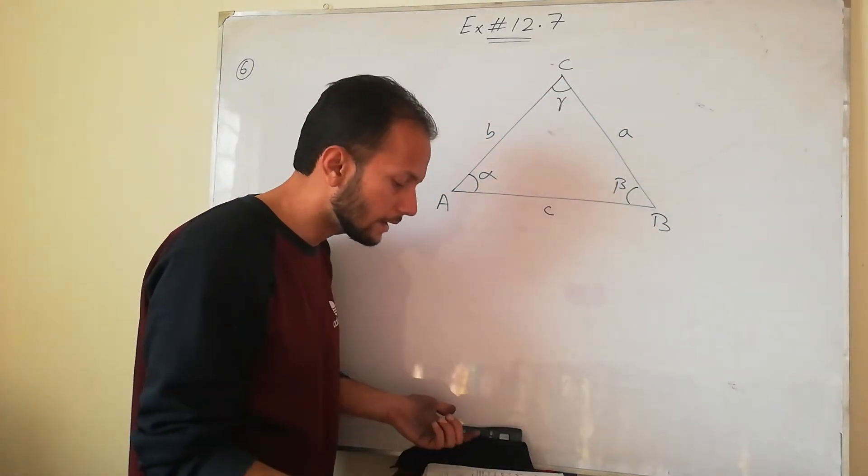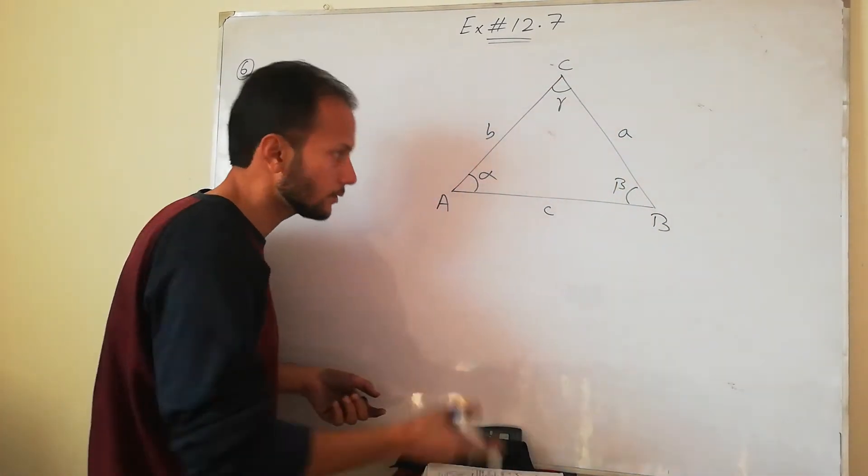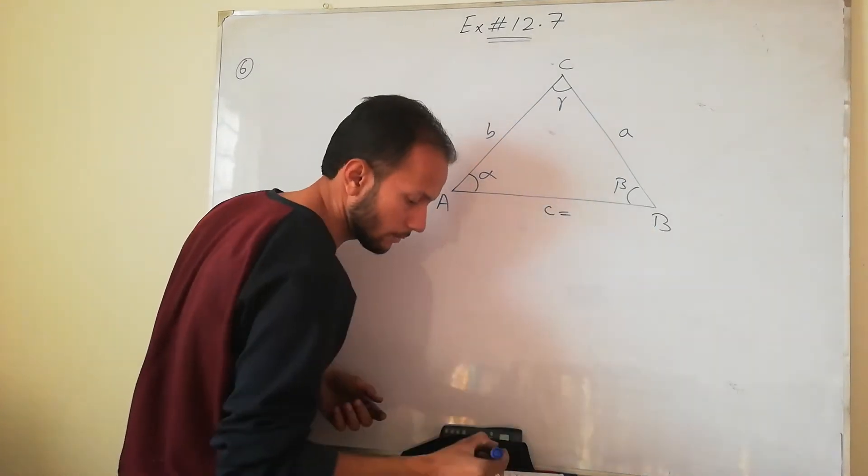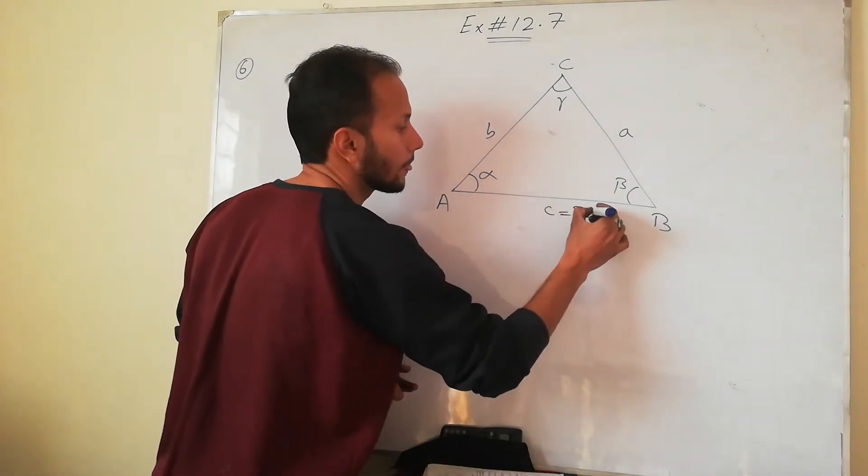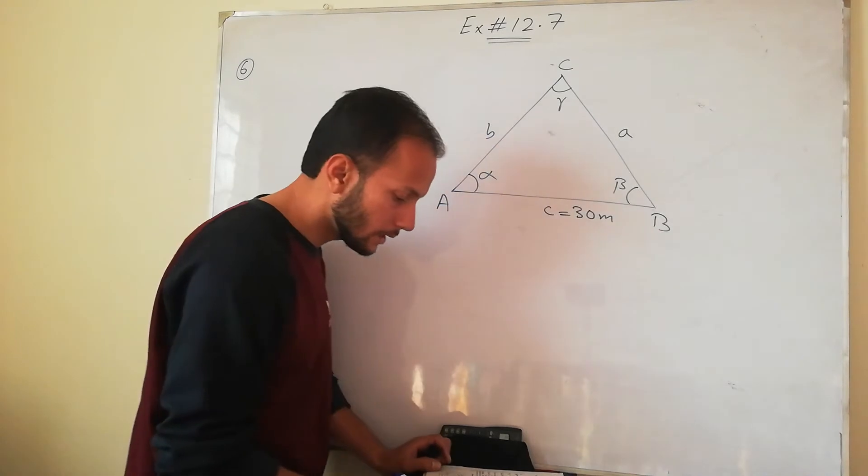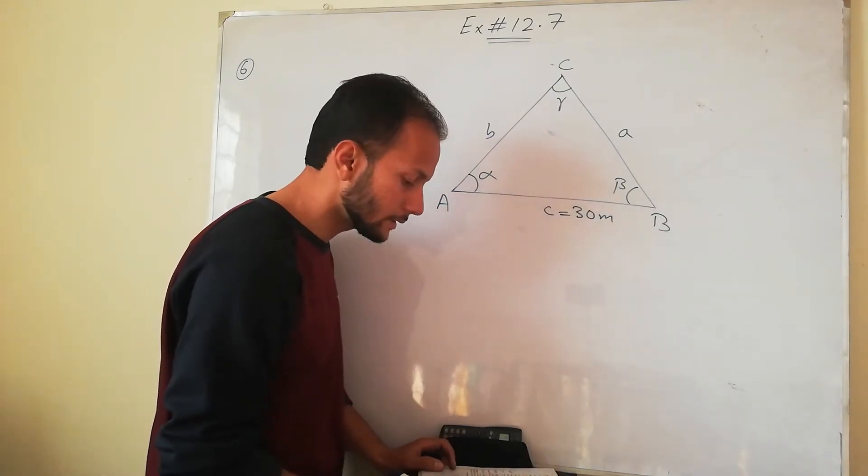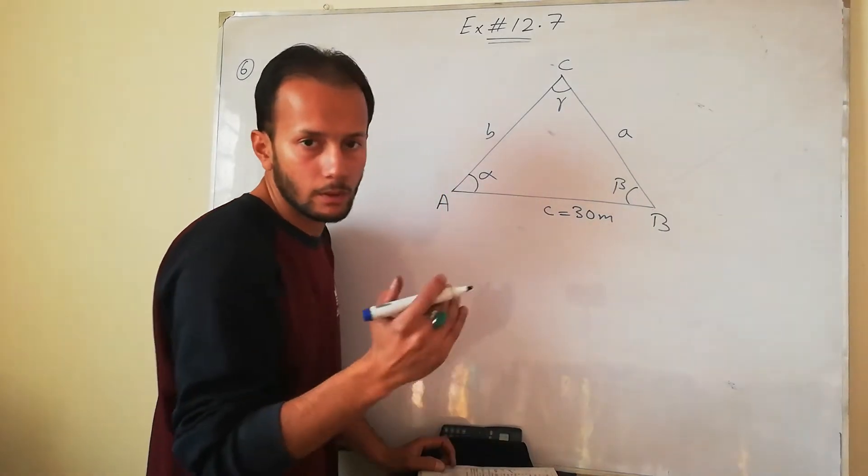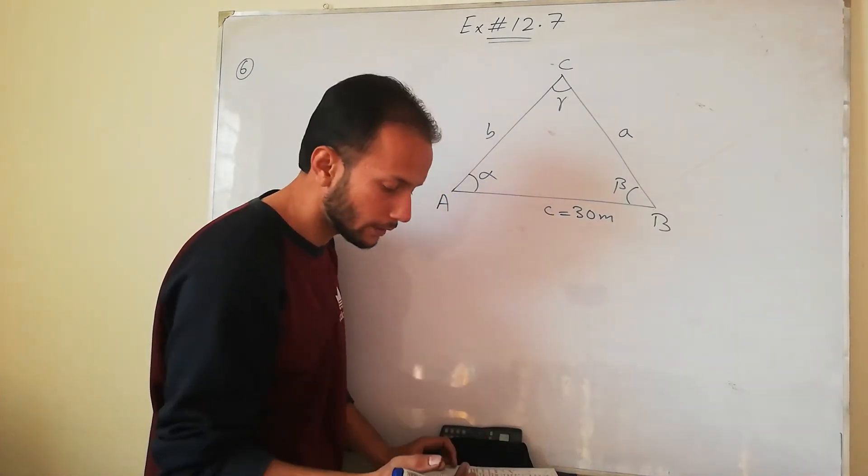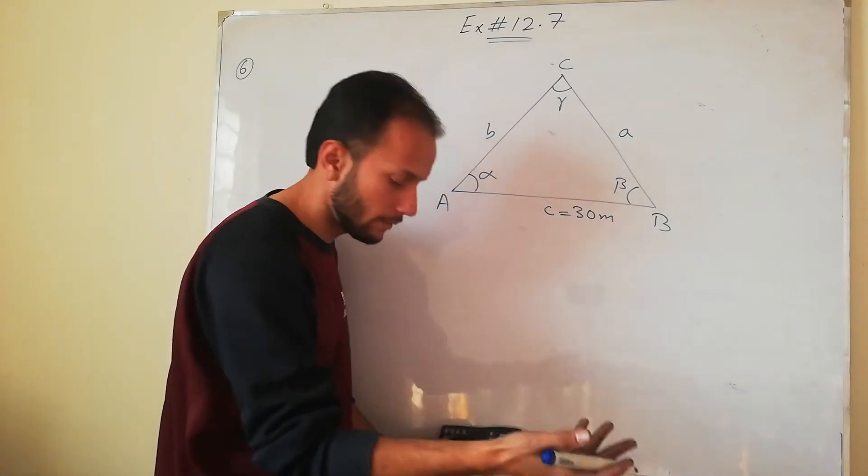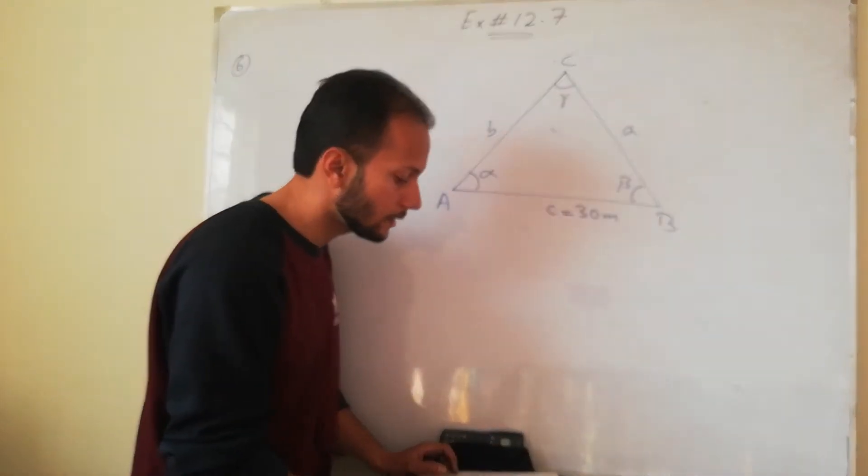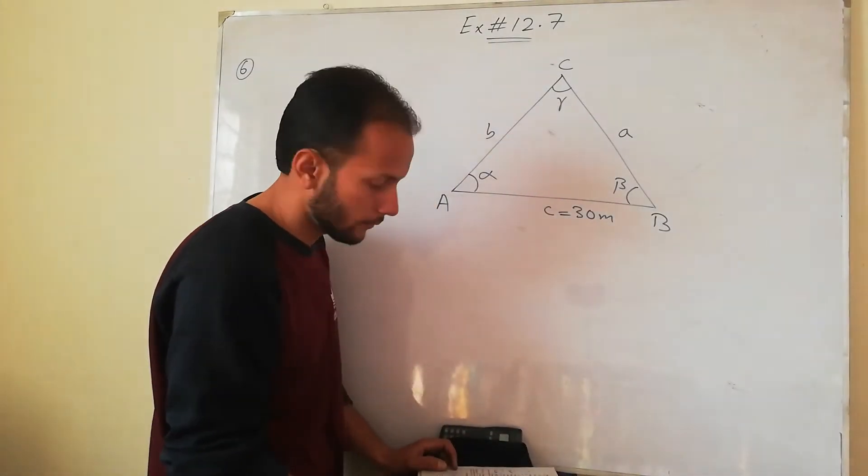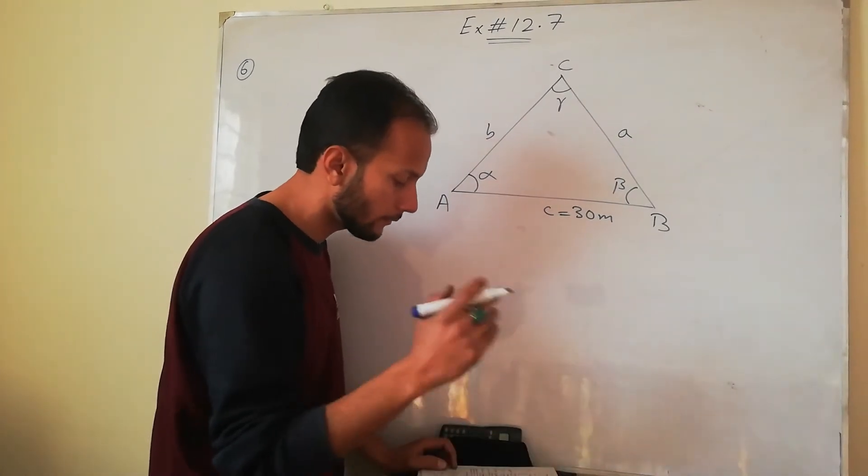So it says that one side is C. So I will say that the value of C is given. How much is it? 30 meters. Next it says if its two corners angles are, one has given 22 degree and a half, I will make it 22.5 degrees. And next angle has given 112 degree and half, means 112.5 degrees.